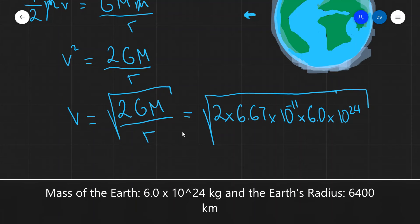Then we divide by the radius of the Earth, which is 6,400 kilometers, or 6,400 × 10³ meters.